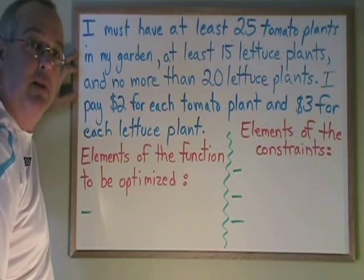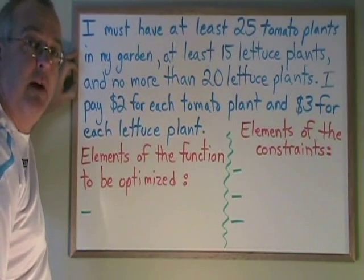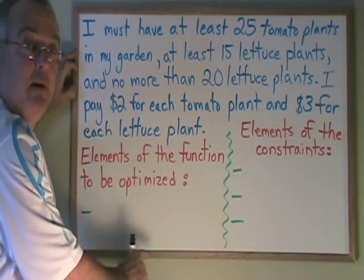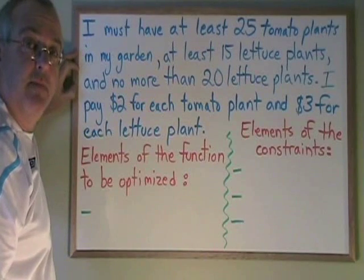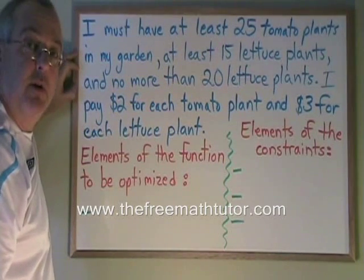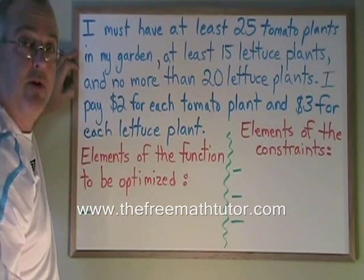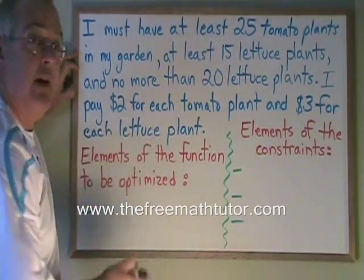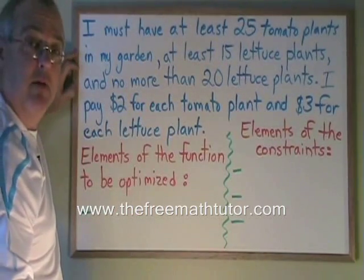In the optimization course that I teach, students are frequently asked to look at an optimization problem and identify the elements of the function to be optimized or identify the elements of the constraints. This is an easy question, but it sounds hard at first because of the unfamiliar language. We have to be able to tell what they mean when they ask for these things and what it is we are pulling out of our word problem to answer it correctly.